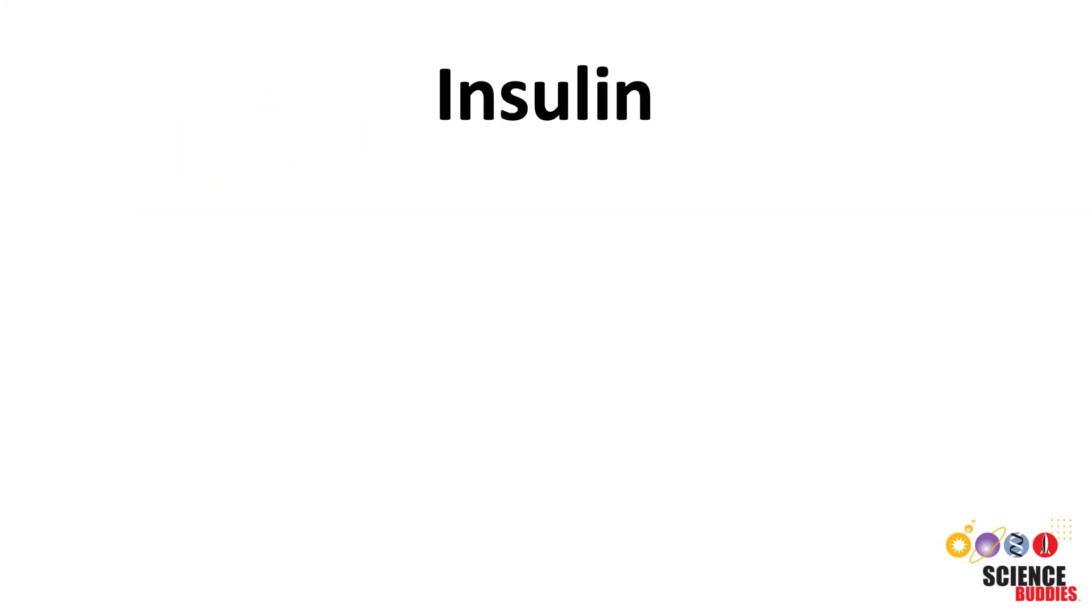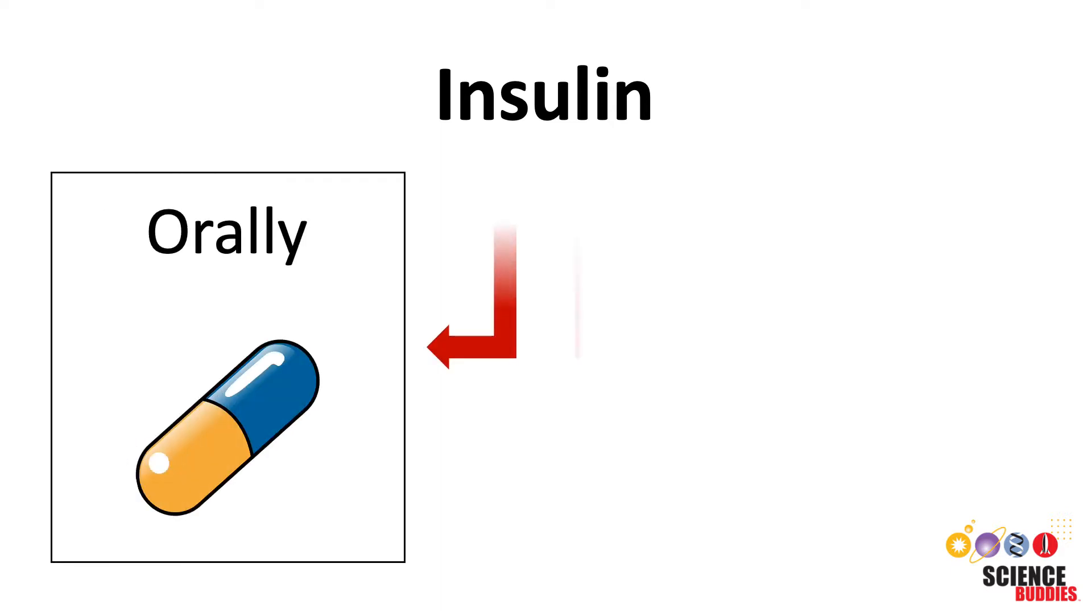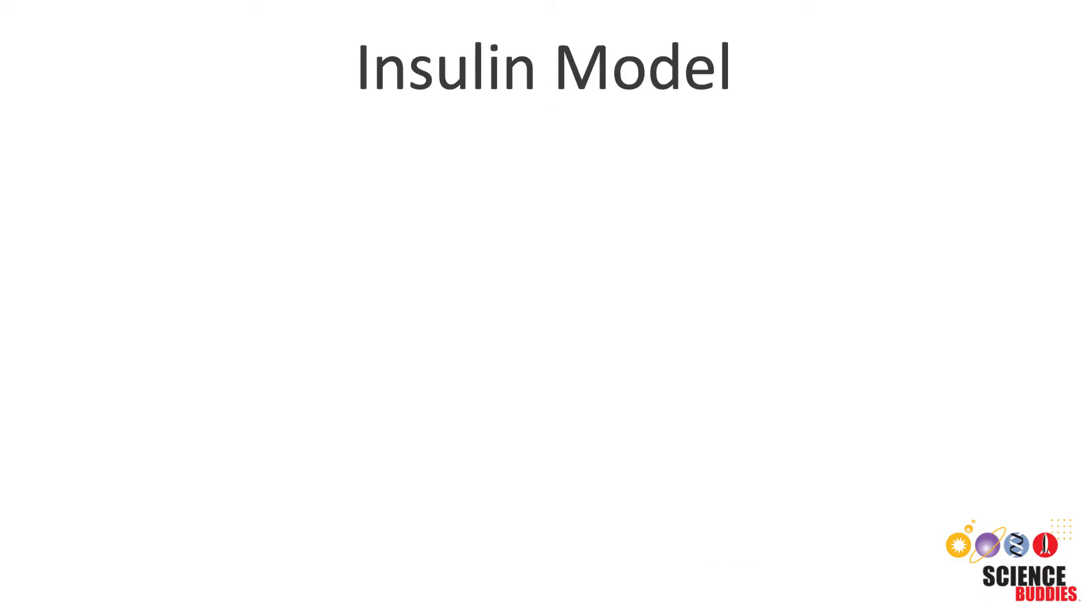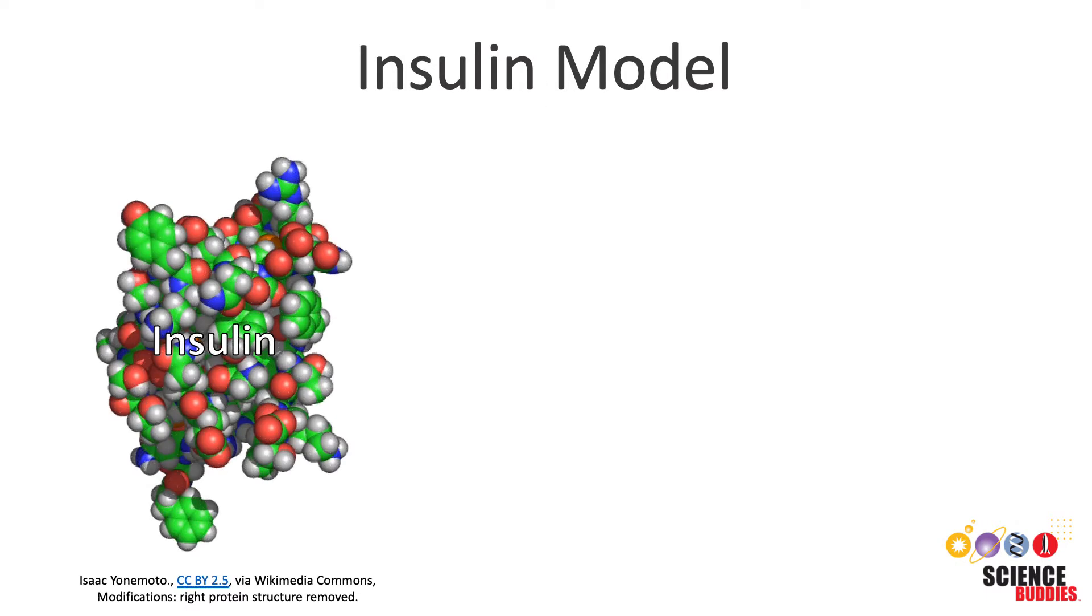The experiment uses a model of insulin to investigate what happens to insulin if it is taken orally versus as an injection. This is how our insulin model works. The correct shape and three-dimensional structure of insulin is important for its function. If its structure is disrupted, the insulin will become ineffective.